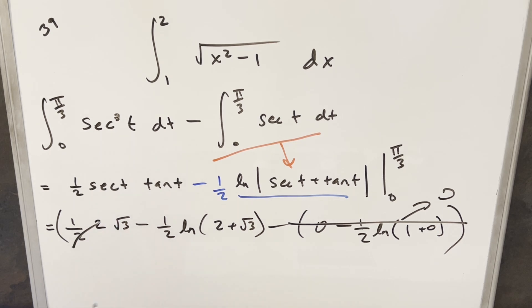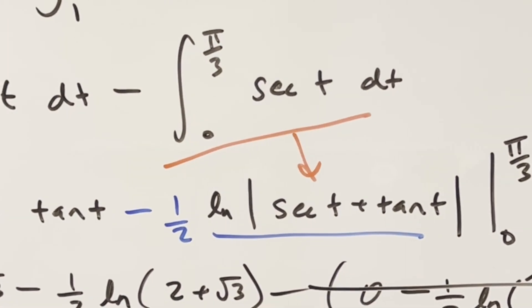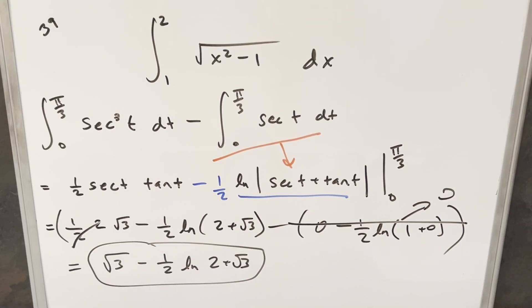But then we can just cancel 2s here. And so for my final solution of this, we just get square root of 3 minus 1 half natural log 2 plus square root of 3. And that's it. Okay, there you have it. Straightforward integral from MIT 2006. Thanks everyone for watching. Have a good day.